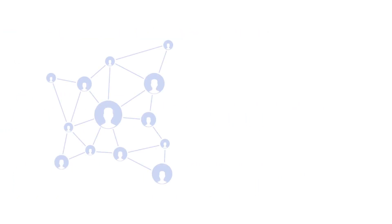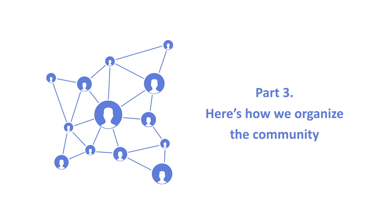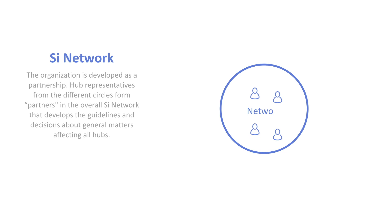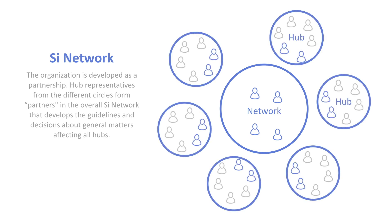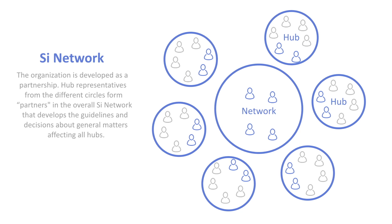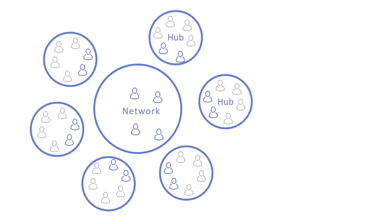Now let's touch on the organizational structure. The SI network is a platform at the center. The organization is developed as a partnership. Hub representatives from the different circles form partners in the overall SI network or SI platform that develops the guidelines and decisions — it's about general matters affecting all hubs. So we have an overall network and then we have hubs as members within it.